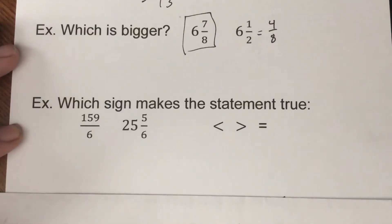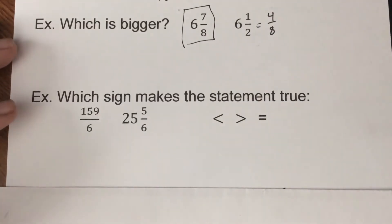Now which sign is going to make this statement true? Well, right now we have 159 over 6 and 25 and 5/6. So one's an improper fraction, one of them is a mixed number. You're going to want to get them in the similar form so that you can really compare them, because right now it's really hard to tell what's what.